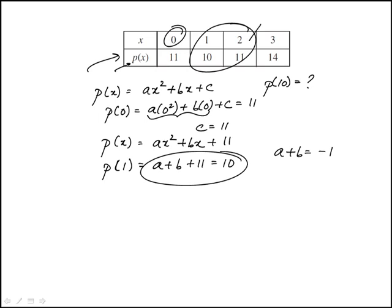From this, p of 2 is a times 2 squared plus b times 2 plus 11, equal to 11. So those drop out, this becomes 0. We have 4a plus 2b equals 0, which means 4a equals minus 2b.